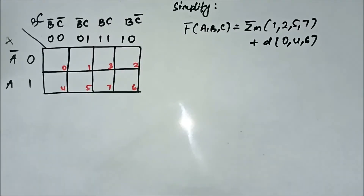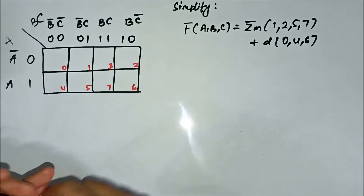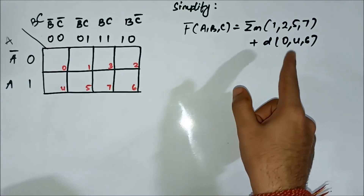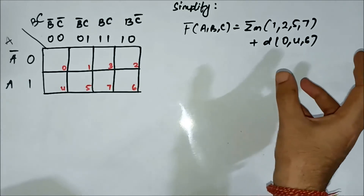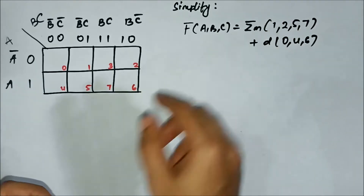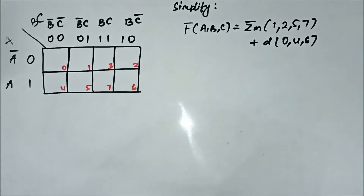This is the second question related to SOP don't-care KMAP simplification. We have the Boolean expression given in terms of the sum of minterms and the don't-care values. We will mark the cells under the minterm bracket as 1 and those under the don't-care bracket as X.